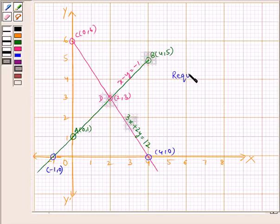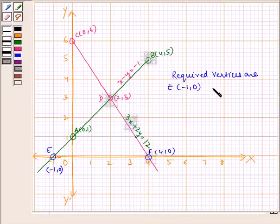Therefore the required vertices are... Let us name it as E and this one is F. So E is (-1,0), D is (2,3), and F is (4,0). Now let us write our solution.